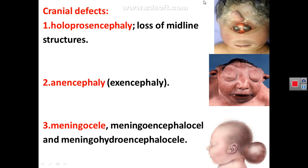There are other defects in the brain. One is the absence of midline structures of the head — the baby will have fusion of the nose and a single eye. This condition is called holoprosencephaly, which is the loss of midline structures of the head. Anencephaly is a large opening in the cranial vault with degeneration of the brain. Meningocele (herniation of meninges) and meningoencephalocele (herniation of meninges with brain) can also occur through small cranial openings.